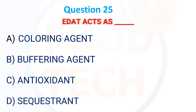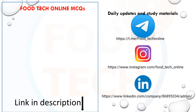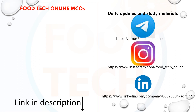EDTA acts as a: A) Color agent, B) Buffering agent, C) Antioxidant, D) Sequestrant. The answer is D) Sequestrant. For more videos, links are in the description. For daily updates and study material, check our Telegram, Instagram, and LinkedIn pages.